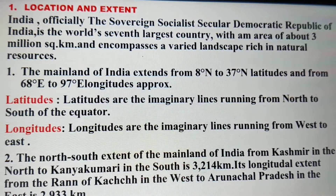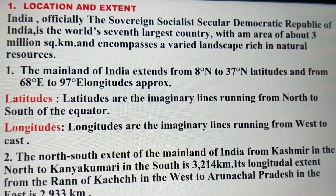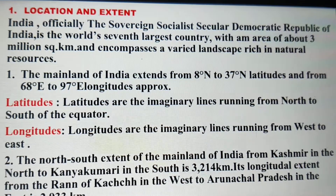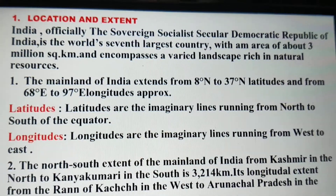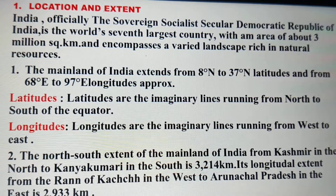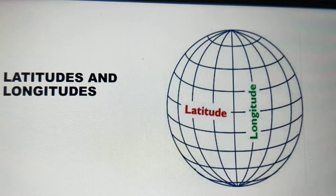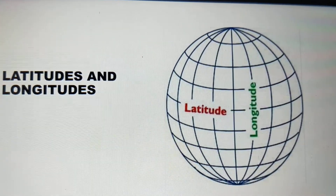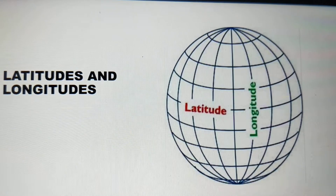The north-south extent of the mainland of India, from Kashmir in the north to Kanyakumari in the south, is 3,214 kilometers. Its longitudinal extent from the Rann of Kutch in the west to Arunachal Pradesh in the east is 2,933 kilometers. Here you can see a diagram of latitudes and longitudes — the red lines are latitudes running north to south, and longitudes are imaginary lines running west to east.